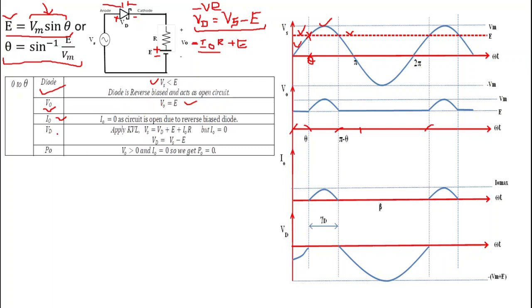The diode voltage Vd equals VS minus E. Since V0 is greater than 0 but i0 equals 0, power P0 equals V0 times i0 equals 0. From the waveform we can confirm: from 0 to θ, V0 equals E, i0 equals 0, and Vd follows the waveform VS minus E.